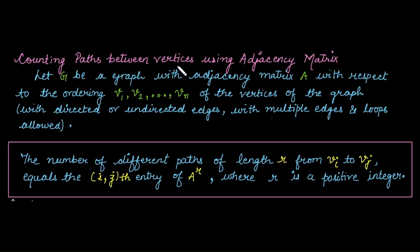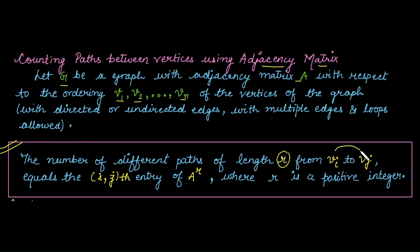We can count paths between vertices using the adjacency matrix. Let G be a graph with adjacency matrix A with respect to the ordering of vertices v_1, v_2, ..., v_n. The number of different paths of length r from vertex i to vertex j is equal to the (i, j) entry of A raised to the power r, where r is a positive integer.